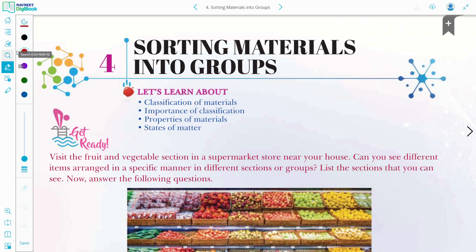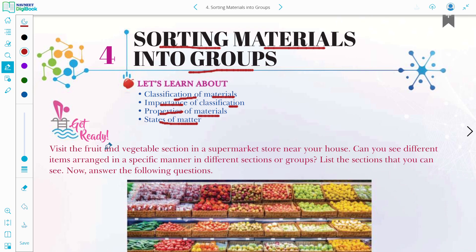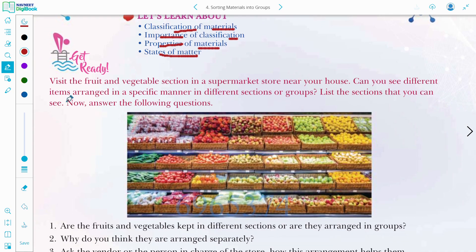Hello dear students, welcome back to ScienceWise once again. Today in this video we are going to study about Chapter 4, that is Sorting Materials into Groups. In this chapter we are going to learn about the classification of material, importance of classification, properties of materials and states of matter. For your kind information, states of matter you have already studied in class 5, which was chapter number 6 of your ScienceWise textbook.